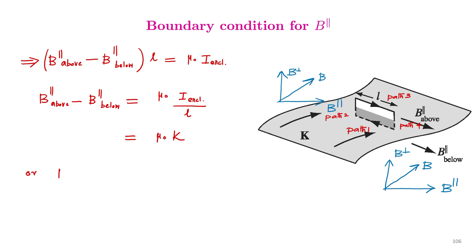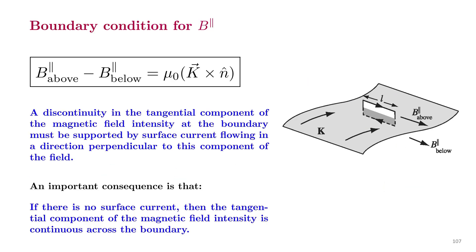We get the boundary condition for the parallel component as: B parallel above minus B parallel below equals μ₀ times k cross n. We see that the parallel component of the magnetic field above and below the surface is discontinuous by an amount μ₀ times k cross n. That is, a discontinuity in the tangential component of the magnetic field intensity at the boundary must be supported by surface current flowing in a direction perpendicular to this component of the field. An important consequence is that if there is no surface current, then the tangential component of the magnetic field intensity is continuous across the boundary.